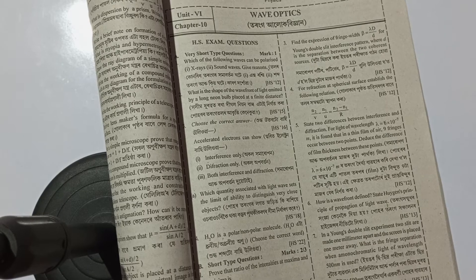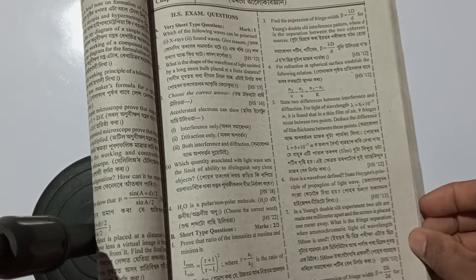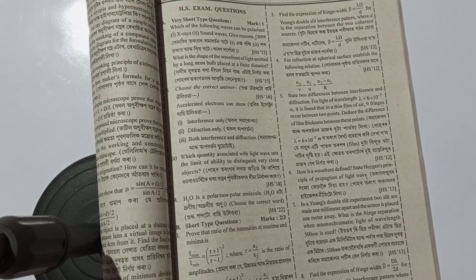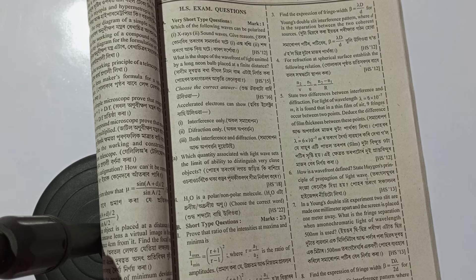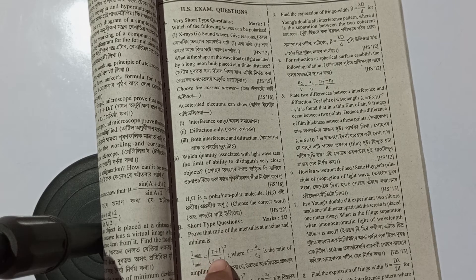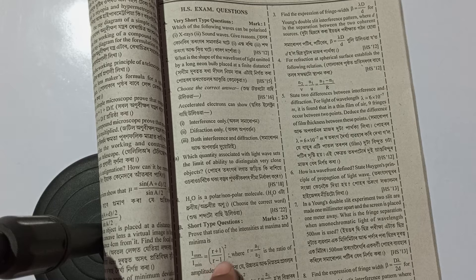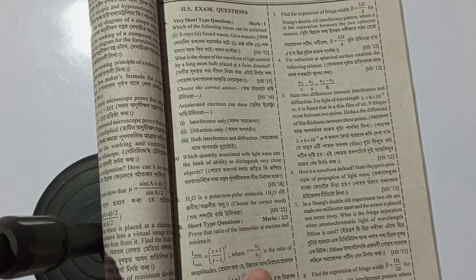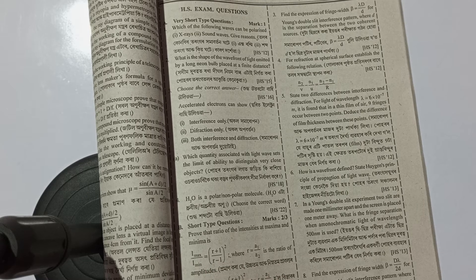The next question is: prove that the ratio of the intensities at maxima and minima is I maximum by I minimum equals R plus 1 divided by R minus 1 whole square, where R equals A1 by A2 is the ratio of amplitudes.